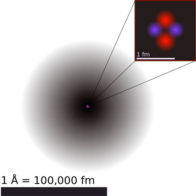Atoms lack a well-defined outer boundary, so their dimensions are usually described in terms of an atomic radius. This is a measure of the distance out to which the electron cloud extends from the nucleus. However, this assumes the atom to exhibit a spherical shape, which is only obeyed for atoms in vacuum or free space.